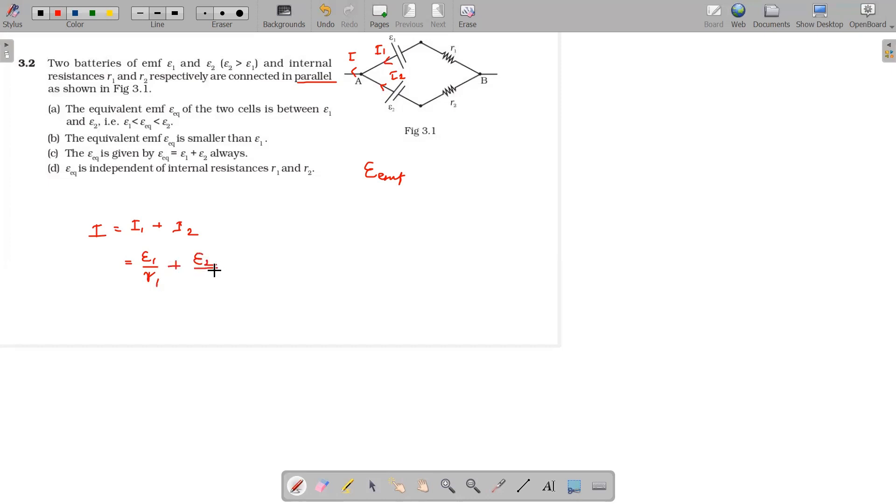Where r1 and r2 are called internal resistance. i is the total current, which equals e_equivalent by r_effective. r_effective, since they are in parallel to each other, the effective resistance will be...